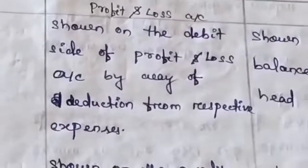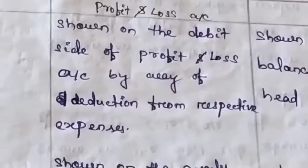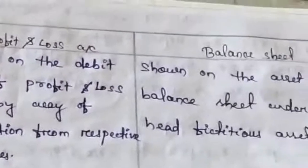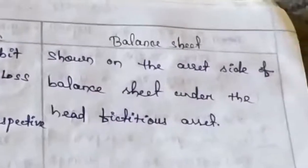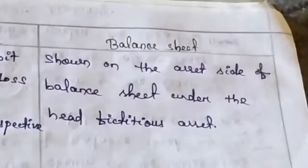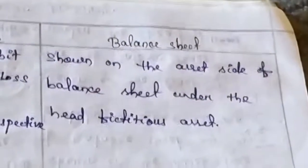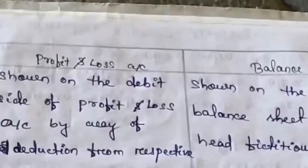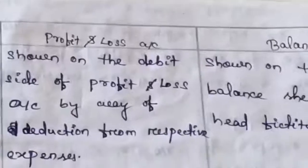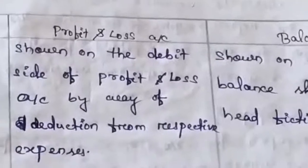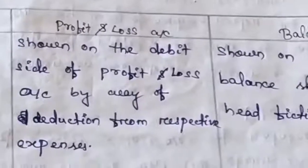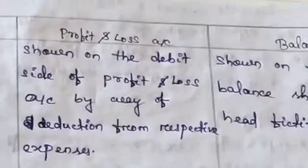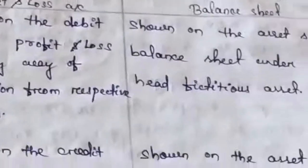According to the accrual concept, prepaid expenses are a fictitious asset. So the second treatment is shown on the asset side of the balance sheet under the head fictitious asset. These are very simple adjustments — if you consider the journal entries, you can post them very easily without any confusion.